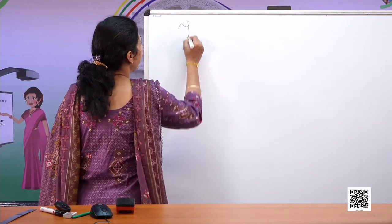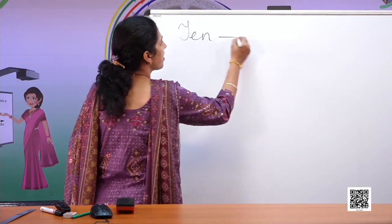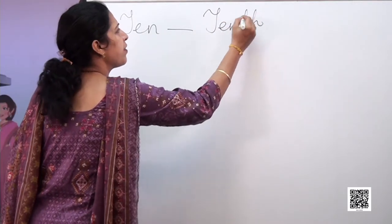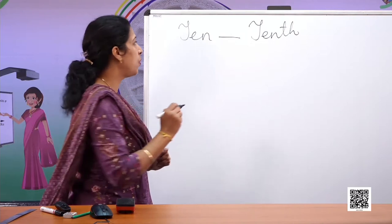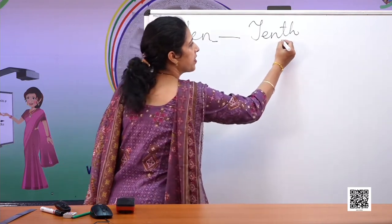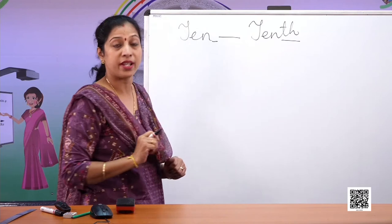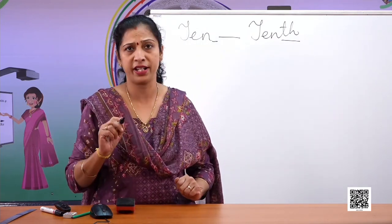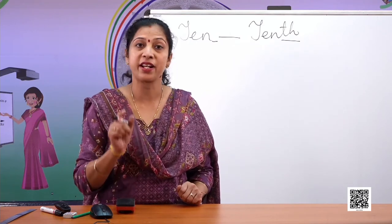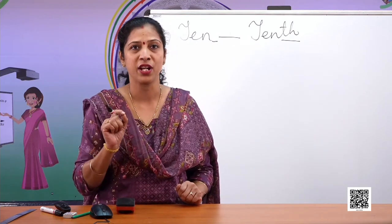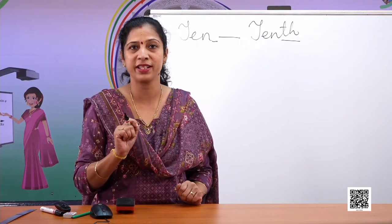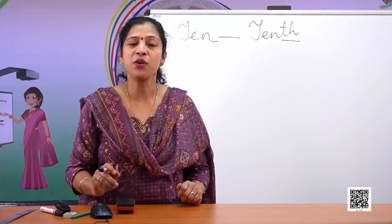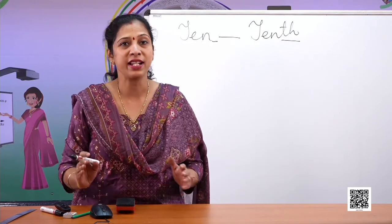Now children, you must have heard about ten and hundred. Are they the same? Is ten the same as tenth? Can you see this? No — here there is no 'th', but over here there is 'th'. So it must be something different. Similarly, hundred and hundredth — are they the same? No, again there is 'th' in hundredth, so hundredth must be different from hundred.